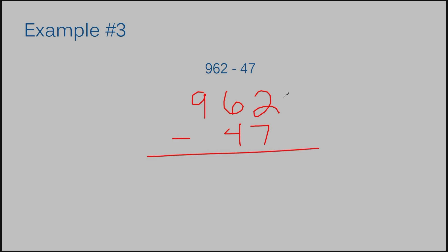Now we're going to subtract. If I have 2 of something and I take 7 away, I can't do that. This is where the regrouping comes in. 962 is a larger number than 47, so we can definitely subtract it. But when we're dealing with the single place value, sometimes the number on the bottom is larger than the number on the top, so you're going to have to borrow to make it work. I need to cross out this 2 and change it to a 12. I crossed out my 2 and turned it into a 12 — I had to borrow it. So I went over to the next column and crossed out my 6 and made it one digit less, which is 5.